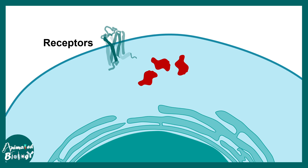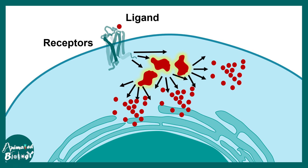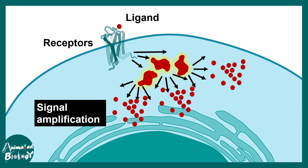The GPCR pathway has an amazing capability of signal amplification. One ligand binding activates the GPCR, which further activates several G protein molecules or G alpha subunits. Several G alpha subunits together with adenylate cyclase generate multiple cyclic AMP molecules. At each step there is an amplification of the signal, so by the time it reaches the nucleus the signal is already augmented and amplified.